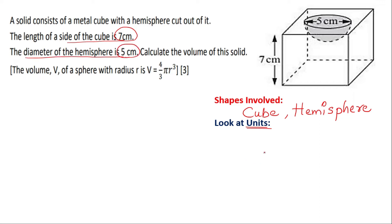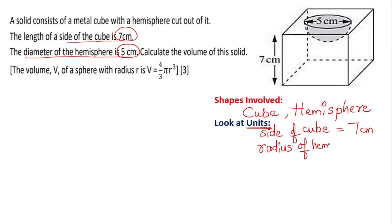Both units are in centimeters. Now let's take note of this data. The side of the cube is equal to seven centimeters and the radius is what we need. As we are not dealing with the diameter in the formula, the radius of the hemisphere will be five divided by two, which is 2.5 centimeters.